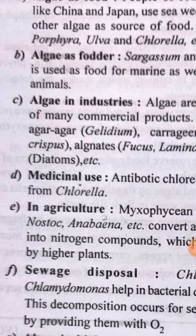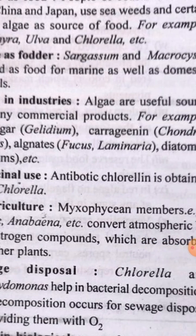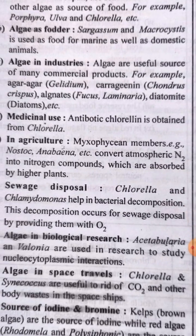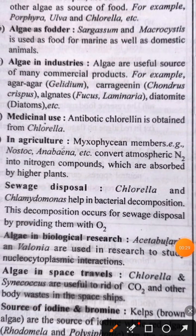First, algae as a food — in coastal areas, most people use algae as a food. The algae used as food are porphyra, ulva, and chlorella. You have to remember these three: porphyra, ulva, and chlorella.